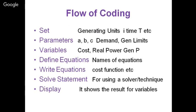To write the ELD code in GAMS, first define the set. Define set I for generating units — for example, three units. Time can also be a set if needed. Then define the parameters: the given values. Cost coefficients a, b, c are parameters, as is the demand (e.g., 300 MW). Generation limits (Pmax and Pmin) for each unit are also parameters. These are all fixed known values. Note that demand cannot be a variable — it is given and should be declared as a parameter.